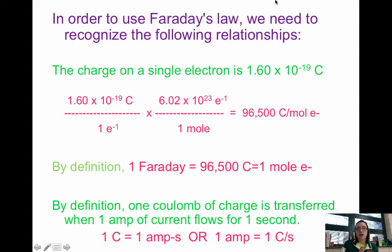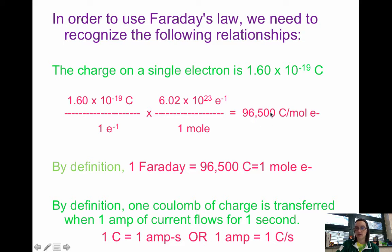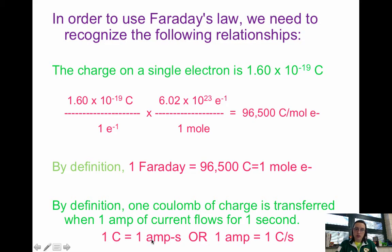To use Faraday's Law, we need to know how these relationships work. The charge on an electron is 1.6 × 10⁻¹⁹ coulombs. We'll normally use Faraday's constant — 96,485 coulombs per mole of electrons (sometimes rounded to 96,500), which equals one Faraday. One coulomb of charge is transferred when one amp flows for one second: Q = IT, where I is current and T is time. One amp equals one coulomb per second, which is very useful — if you have five amps, you have five coulombs per second.